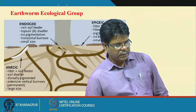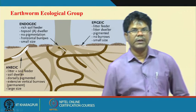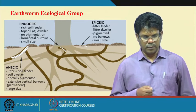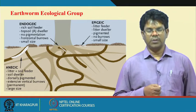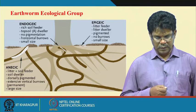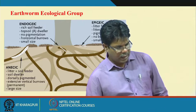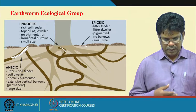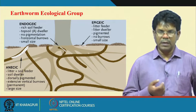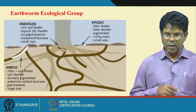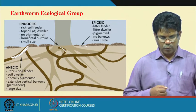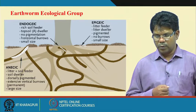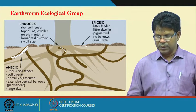The second group is the endogeic earthworm — these are soil feeders that live in the topsoil with no pigmentation. They feed only on soil and are not suitable for the vermicomposting process. The third group is the anecic earthworm, which lives in deep subsoil layers, making holes and tunnels. They feed on both litter and soil, so this type can also be used for the composting process, though endogeic earthworms cannot.